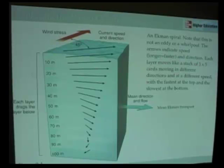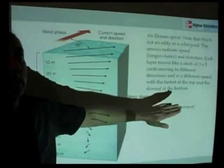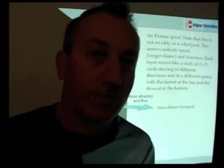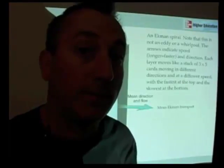Play with some index cards, and each layer of water moving in a different direction and moving at a different speed, when you add all that up, you get a mean flowing direction that's 90 degrees to the right of the wind. And in the northern hemisphere, what would it be in the southern hemisphere? Email me if you don't know the answer.